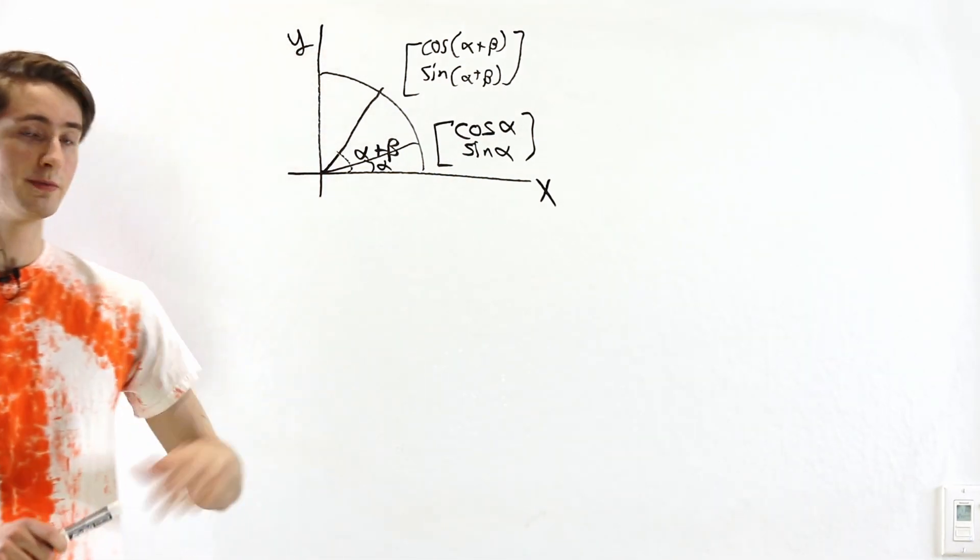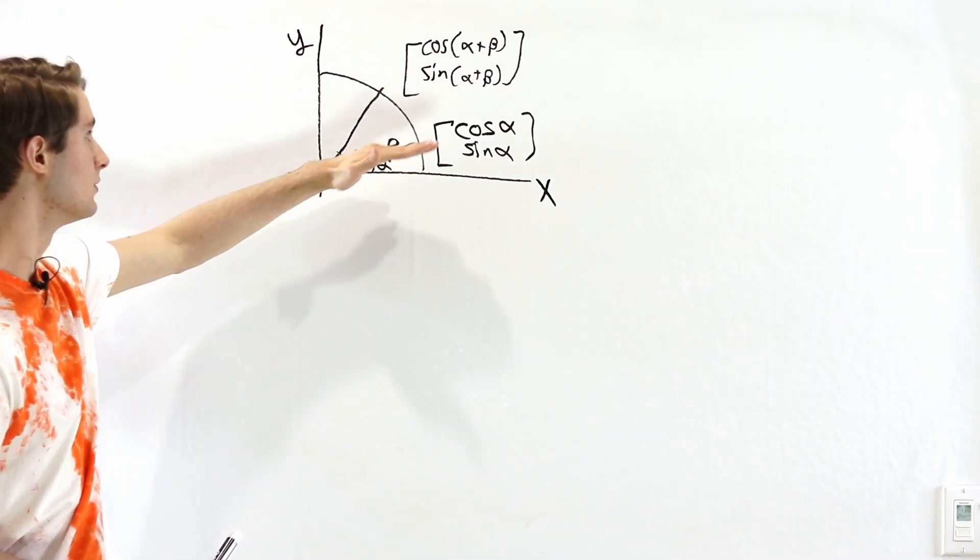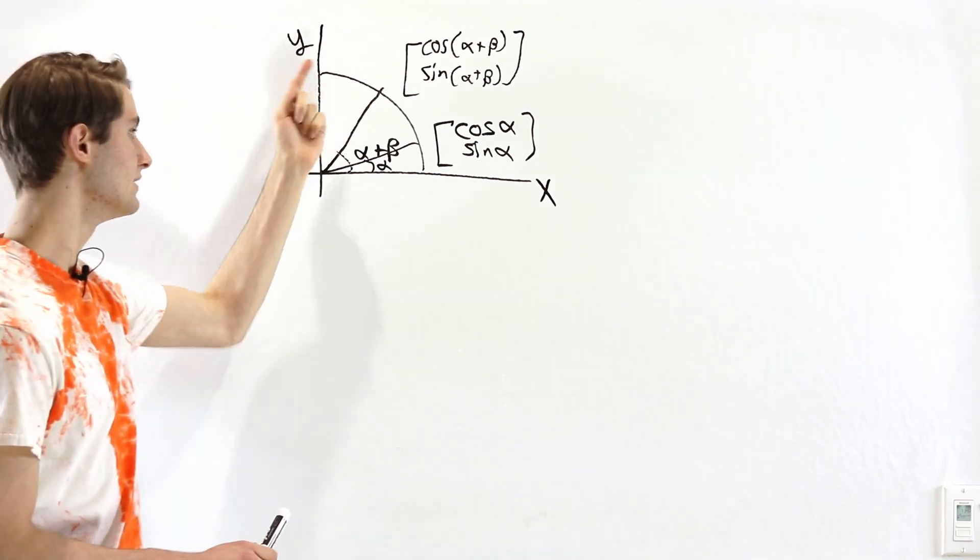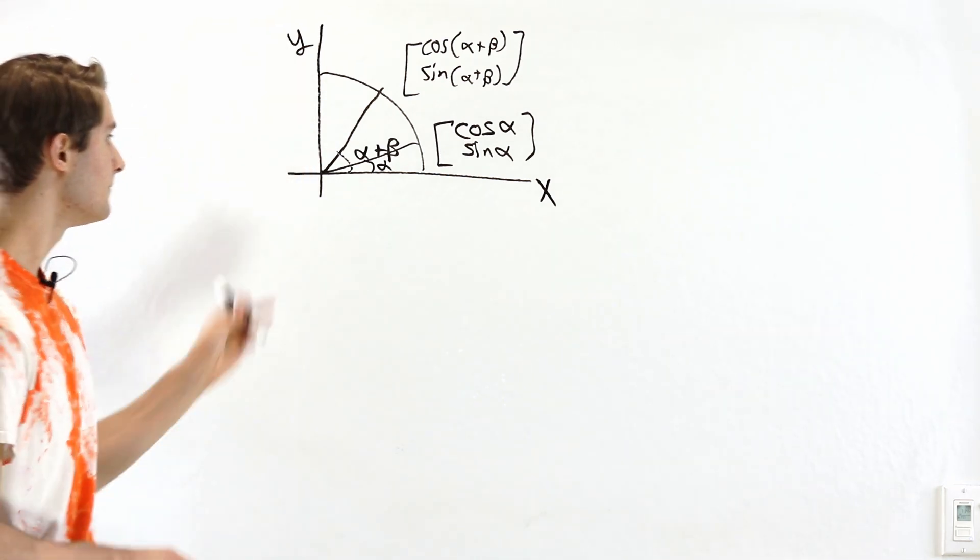Well, to get to alpha plus beta, we can rotate by alpha and then after that rotate by beta extra and that's going to give us alpha plus beta in total. In order to do that, we can use the rotation matrix.